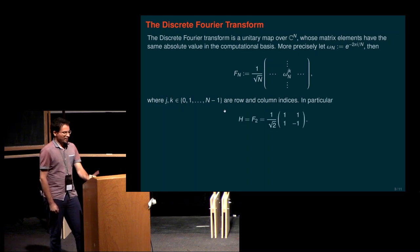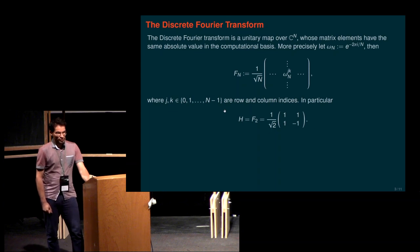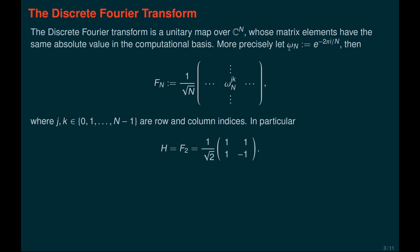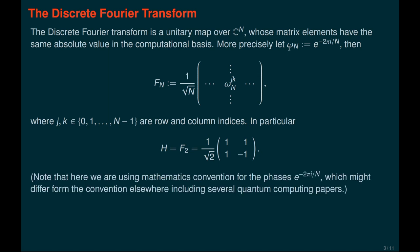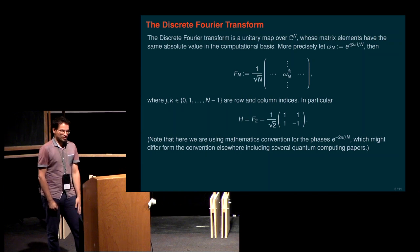The indices run from 0 to N-1 for the rows and columns. In particular, most of you are probably familiar with the Hadamard transform, which is just the Fourier transform over two elements. Here this root of unity is just minus 1. I should note that I'm using the mathematics convention for the signs in the Fourier transform - the minus sign in the exponent. In some other lecture notes and papers you will see a plus sign instead, but that doesn't make any major difference - it's just a convention.